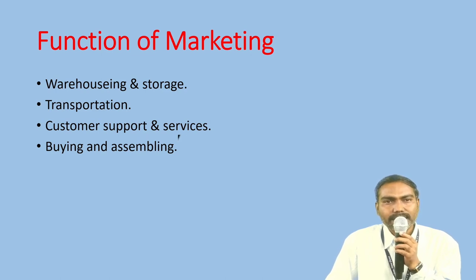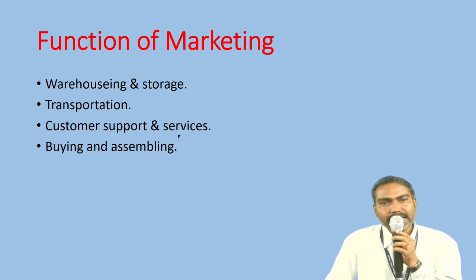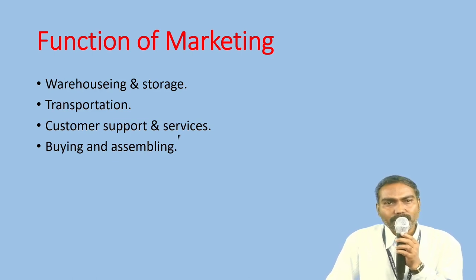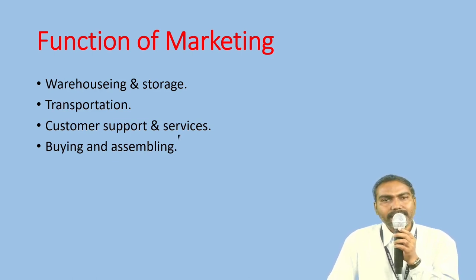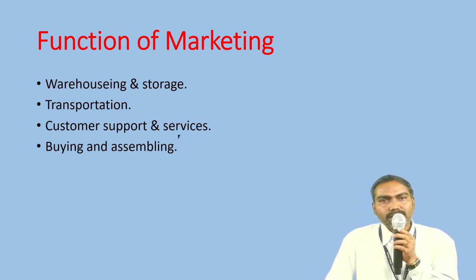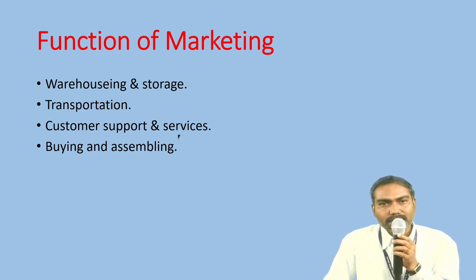The next function of marketing is buying and assembling. Buying is where the organization purchases different kinds of raw materials for the purpose of manufacturing finished goods. Assembling is where they assemble the finished product as per their standardization, color, functions, or the benefits received by the customers.